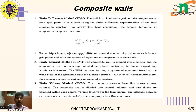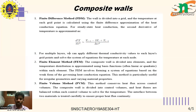In the finite element method, the composite wall is divided into elements and the temperature distribution is approximated using basis functions within each element. The method involves forming a system of equations based on the weak form of the governing heat conduction equation. This method is particularly useful for irregular geometries and varying material properties.